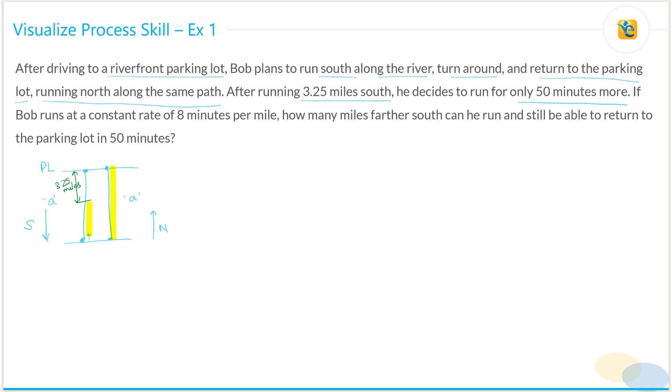That is what this means. So very important to understand. If Bob runs, now there's more information. If Bob runs at the constant rate of eight minutes per mile. Now what does eight minutes to cover one mile, this is another way to present the speed information.